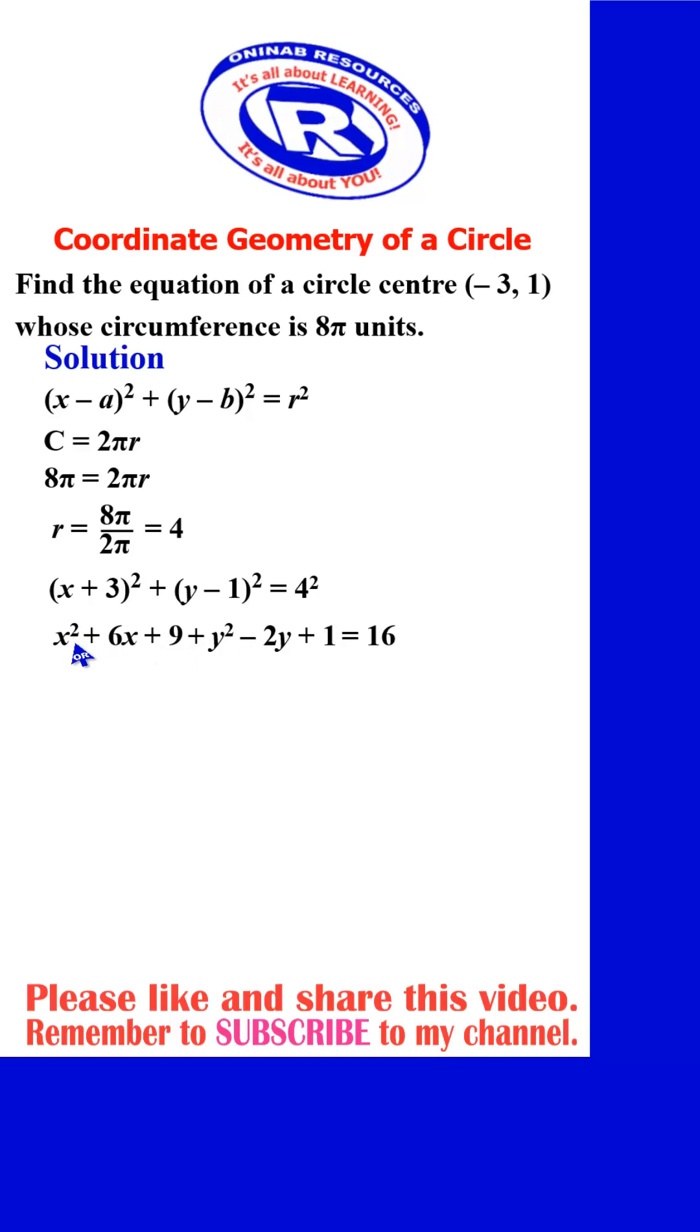with the highest power, we have x² + y², then plus 6x - 2y + 9 + 1 - 16 = 0. We only simplify this constant term. This is 10 - 16, giving us -6 equals 0, which gives the equation of the circle center (-3, 1) whose circumference is 8π units.